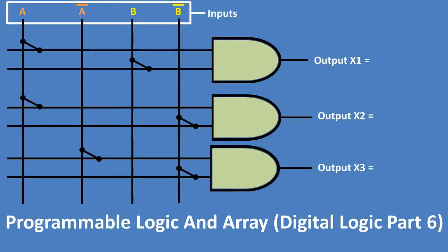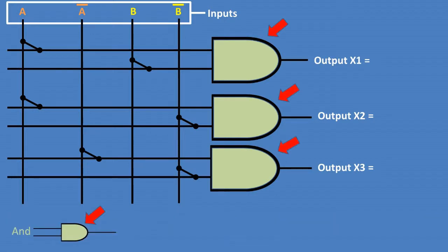Hello and welcome to Digital Logic Part Six. In this video we'll be going over programmable logic and arrays. The AND array consists of a matrix or grid of logical AND gates to the right and logical possibility inputs for these gates at the top of the grid. These logical possibilities are connected to the AND gates by programmable links.